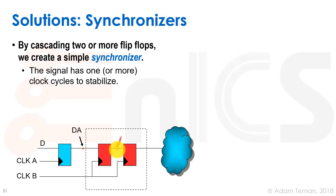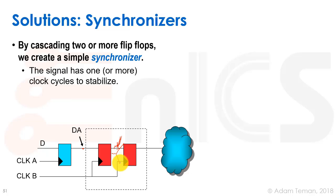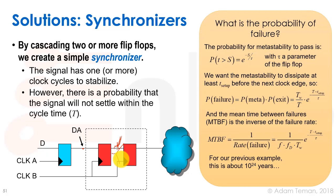This metastability will dissipate quickly due to the regenerative property of CMOS circuits. Even if we reach a metastable state, it will quickly go to one or zero. As long as it settles in less than one cycle time — which it usually does much faster — the second clock edge will sample either a one or a zero, giving a real digital signal. However, there is a probability that the signal will not settle within the cycle time.